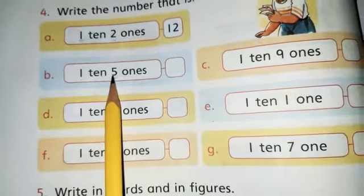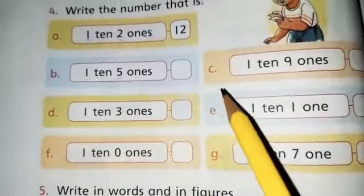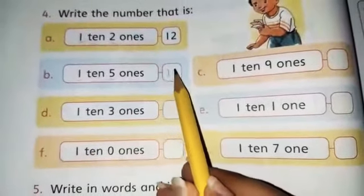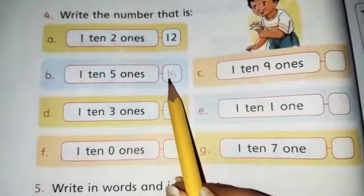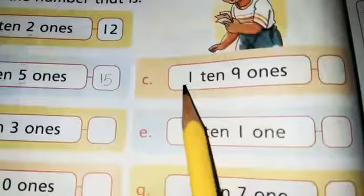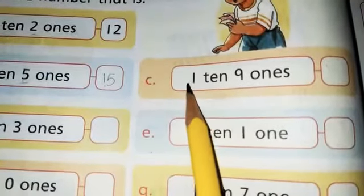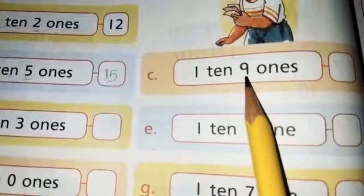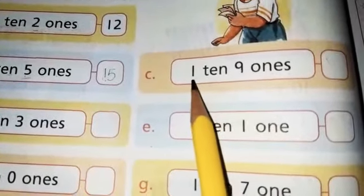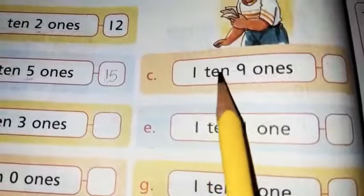Right, fifteen here. Part c: how many tens are there? Only one ten and how many ones are there? There are nine ones. So my dear students one ten nine ones become nineteen.